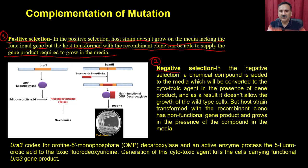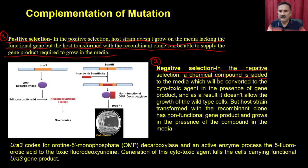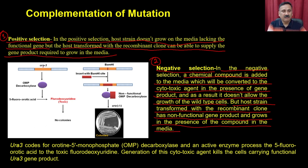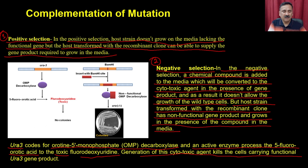Negative selection: when you restore the activity of the gene it actually kills the transformed host. A chemical compound is added to the media which is converted into a cytotoxic agent in the presence of the gene product, and as a result it does not allow the growth of the wild type. But the host transformed with the recombinant clone has a non-functional gene product and grows in the presence of the compound. For example, URA3 is the gene coding for OMP decarboxylase (orotidine 5'-monophosphate decarboxylase). An active enzyme processes 5-fluoroorotic acid to a toxic compound called fluorodeoxyuridine, and generation of this toxic compound kills the cells carrying the functional URA3 gene.